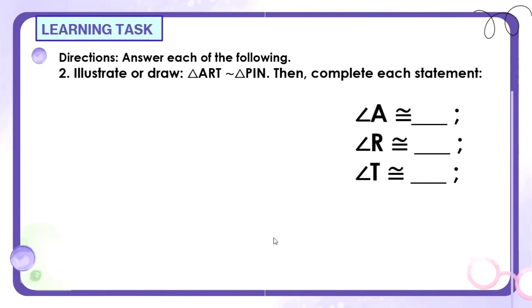Another question: Illustrate or draw triangle A-R-T similar to triangle P-I-N. Then complete each statement. Mayroon tatlong angle na given dito at alamin natin kung ano yung mga congruent sa kanya. Mag-drawing tayo ng dalawang triangle. First is yung triangle A-R-T. Ang congruent sa angle A is of course yung kapareho niya ng pwesto dun sa isang triangle. This is angle P.